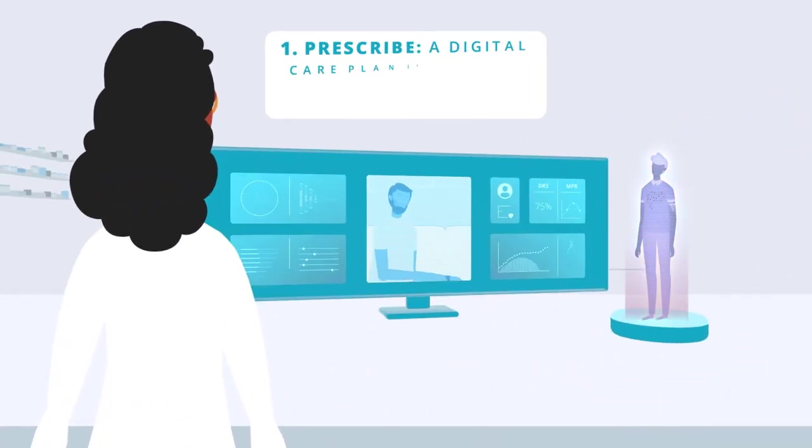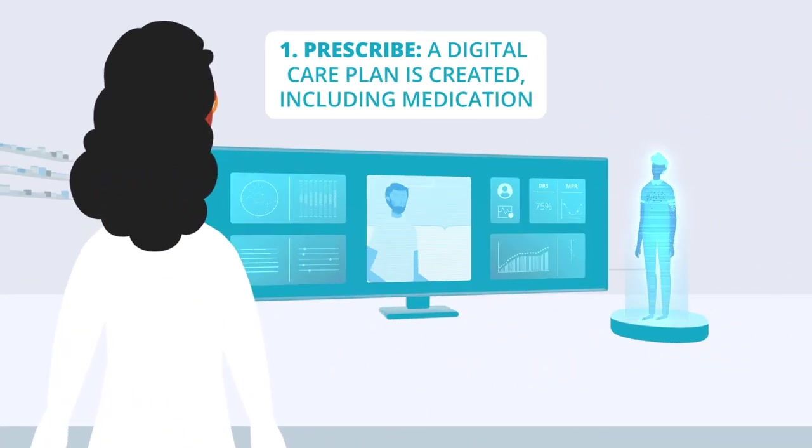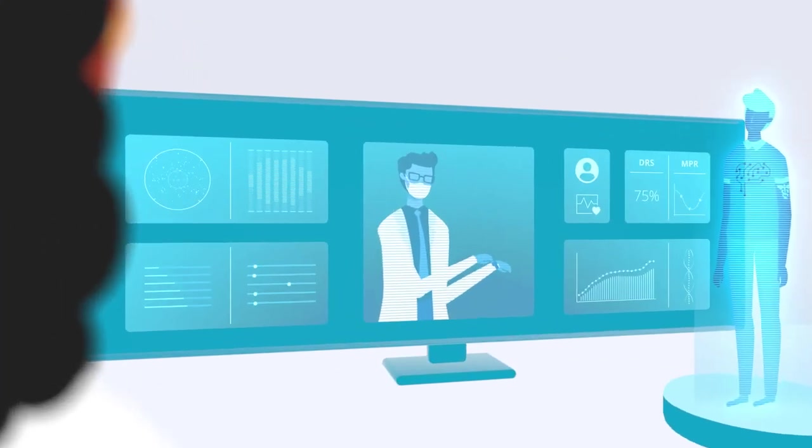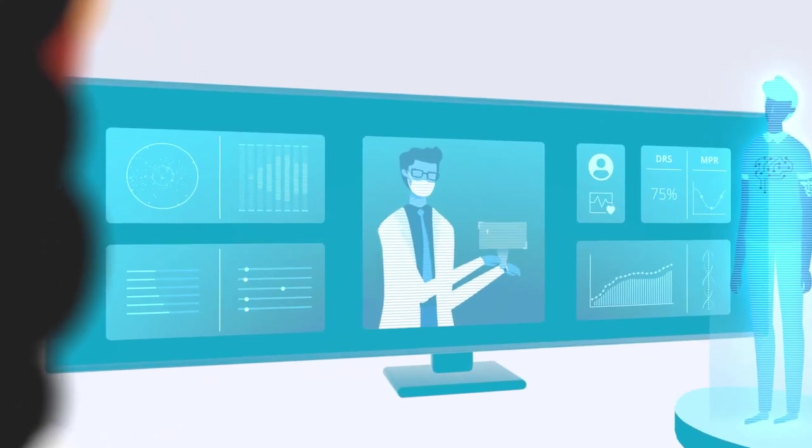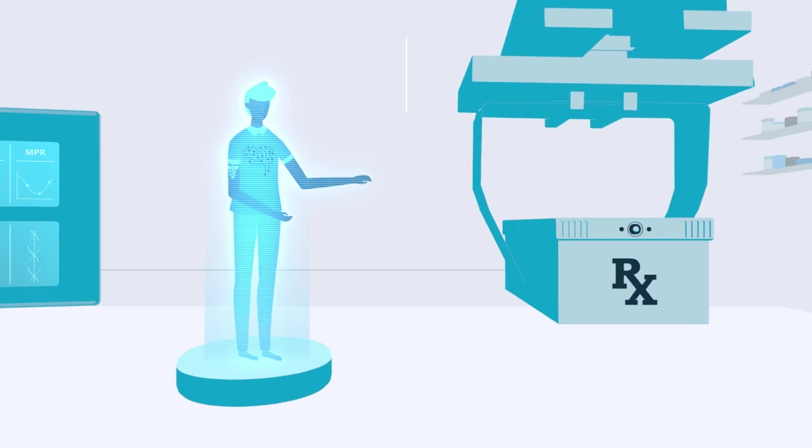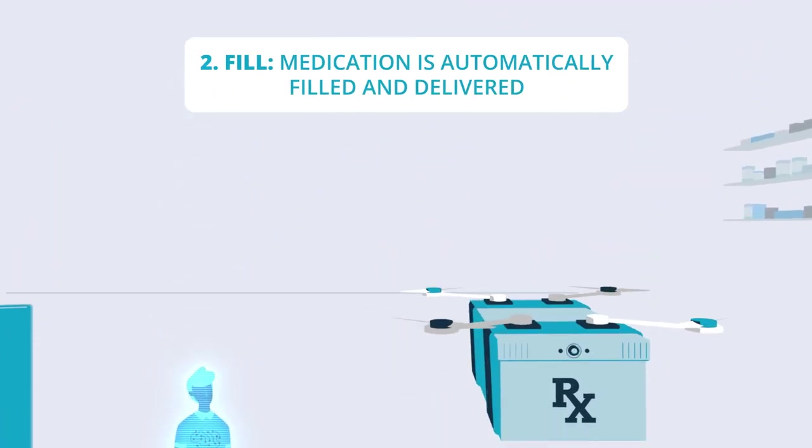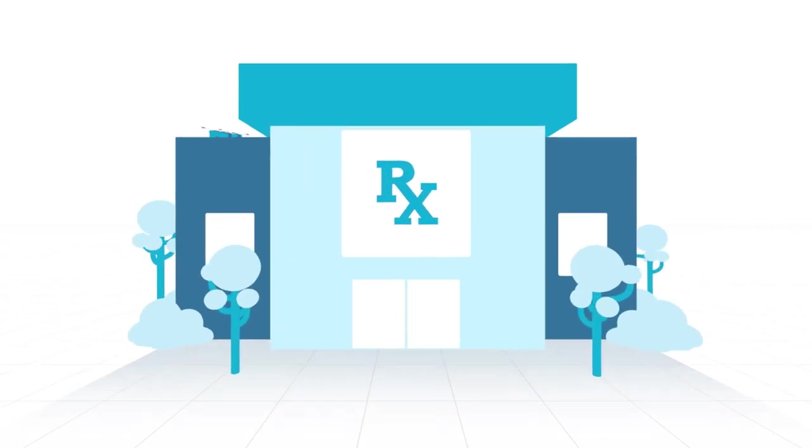Before his visit, an AI engine flagged Don as a potential diabetic, so he receives an at-home A1c test kit from his pharmacy. His doctor diagnoses type 2 diabetes. He selects drone delivery for his meds, which are filled and packaged.